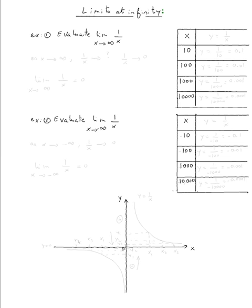We're trying to evaluate the limit of one over x as x approaches infinity. In other words, as x gets larger and larger, what happens to the value of one over x? What are they approaching? Are they approaching a number? Are they getting larger and larger also?